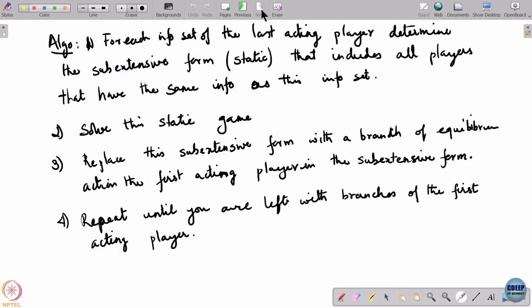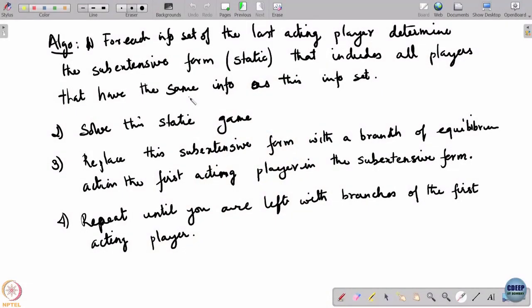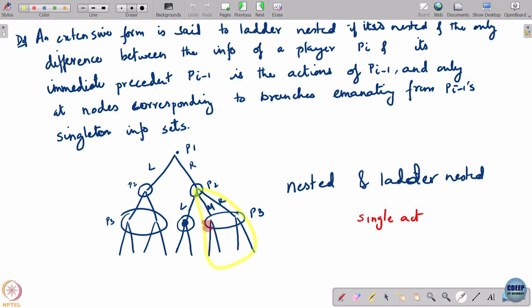Two points: first, what if you solve this static game and it turns out that there are multiple equilibria? Suppose, for example, this static game was like a stag-hunt game and there are multiple equilibria. Say there is one equilibrium which is M followed by M, and another equilibrium which is R followed by something else. You have to replace this whole yellow tree with one of these equilibria — but which of the two should you choose?